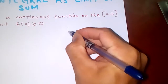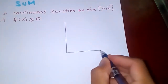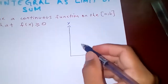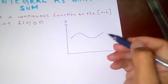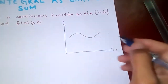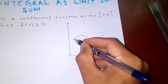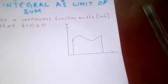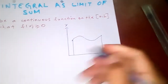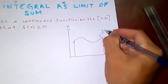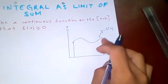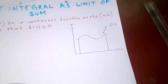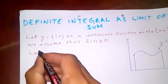Now let's draw a diagram. Here we have the x-axis and y-axis. What we are going to find is the area under this curve. We are going to find the area of this region using integration, and this curve is y = f(x).